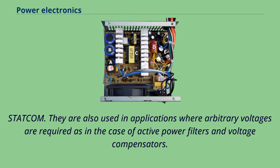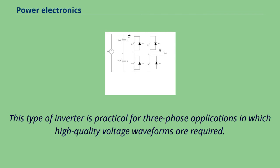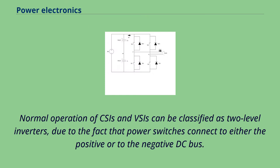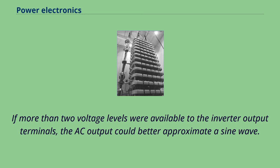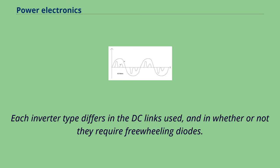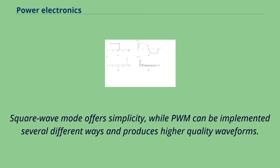VSIs are also used in applications where arbitrary voltages are required, such as in active power filters and voltage compensators. Current source inverters are used to produce an AC output current from a DC current supply and are practical for three-phase applications requiring high-quality voltage waveforms. A relatively new class called multilevel inverters has gained widespread interest. Normal operation of CSIs and VSIs can be classified as two-level inverters, due to power switches connecting to either the positive or negative DC bus. Each inverter type differs in the DC links used and whether or not they require freewheeling diodes. Either can be made to operate in square wave or pulse-width modulation mode, depending on its intended usage.